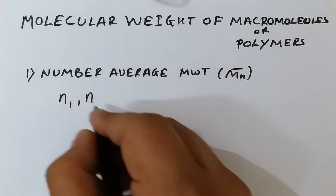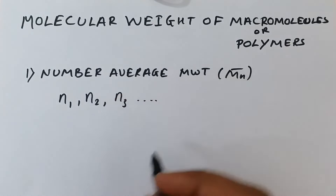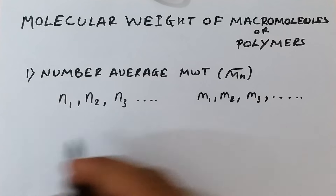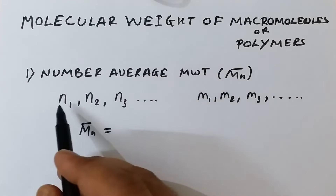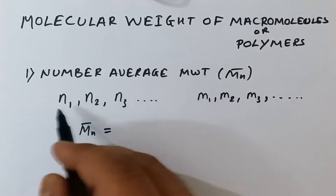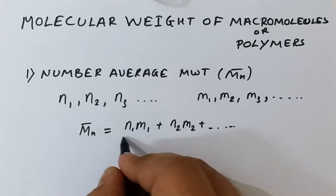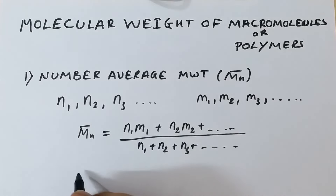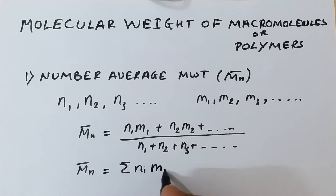Suppose our polymeric solution contains several polymeric chains having chain lengths n1, n2, n3, and so on, and the masses of these chains are m1, m2, m3, and so on. Then the number average molecular weight Mn bar can be written as: n1·m1 + n2·m2 + dot dot dot, divided by n1 + n2 + n3 + dot dot dot. In general, the number average molecular weight can be written as summation(ni·mi) divided by summation(ni).